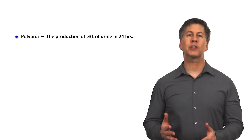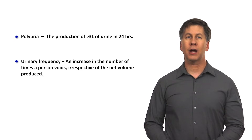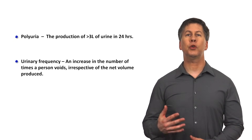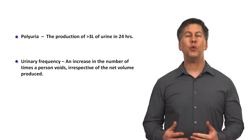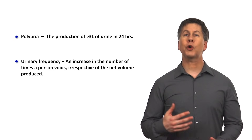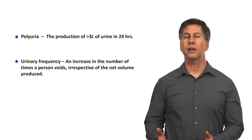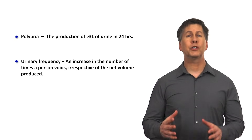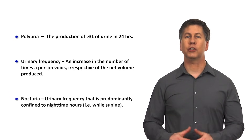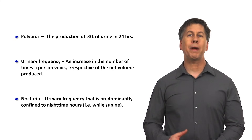It's important to distinguish polyuria from two similar and overlapping pathologies. Urinary frequency is an increase in the number of times a person voids, irrespective of the net volume produced. For example, a person who urinates 10 times in one day producing 200 milliliters each time would have urinary frequency but not polyuria. Alternatively, another person might urinate 3 times in one day squeezing out 1 liter each time — that's polyuria, not urinary frequency. And last is nocturia, which is a subtype of urinary frequency predominantly confined to the nighttime hours when the patient is supine.